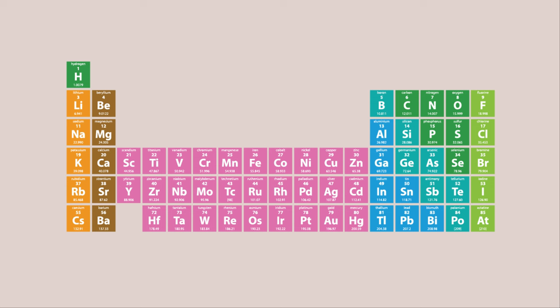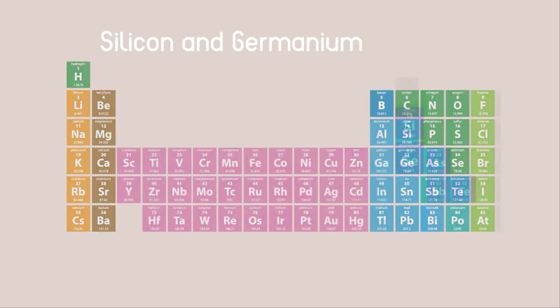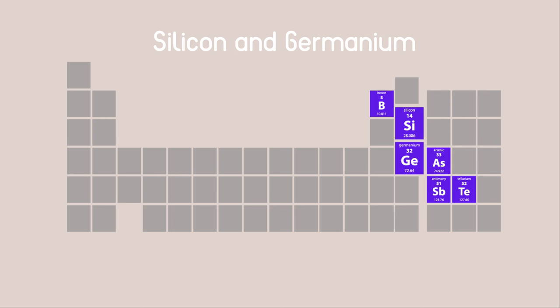In between the elements gradually change from being metallic to non-metallic, with some like silicon and germanium neither one nor the other.